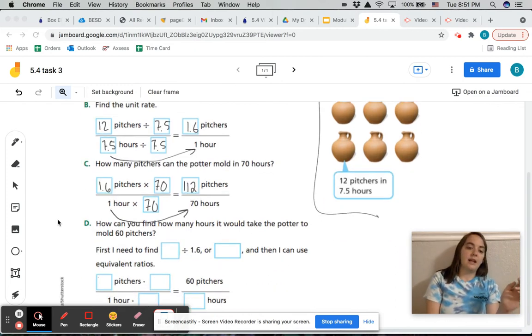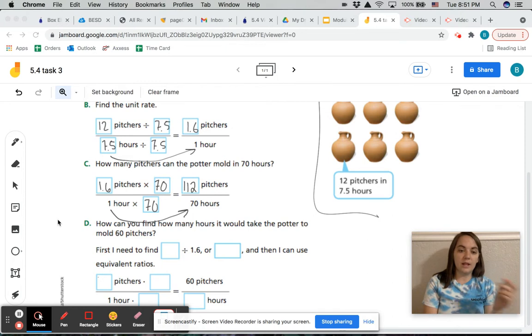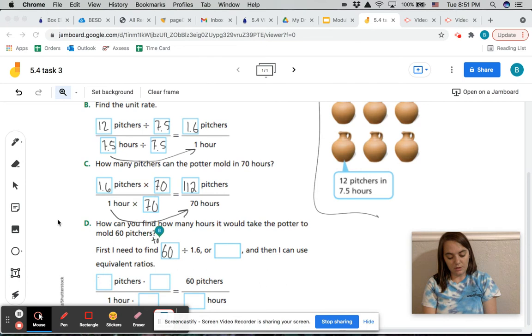The part D, part D asks, how can you find how many hours it would take the potter to mold 60 pitchers? So first, we need to find, we need to find, we have 60 pitchers, and we need to divide, 60 pitchers. Well, we need to figure out how, I'm going to do 60 divided by 1.6. That means this is 60, this is total pitchers divided by pitchers per hour. And then that gives us 60 divided by 1.6 is 37.5.